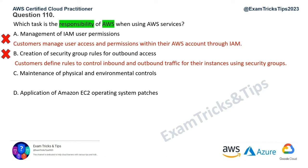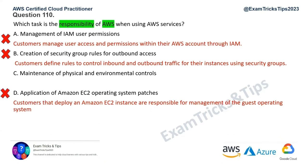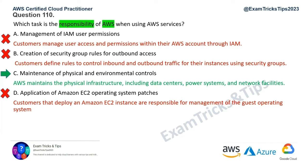Application of Amazon EC2 operating system patches is also a customer responsibility, so that's ruled out too. That leaves option C — management of physical and environmental controls. As a customer, you do not have access to AWS data centers or availability zones. AWS is responsible for maintaining physical and environmental controls, which falls under security of the cloud. So option C is the answer for question 110.